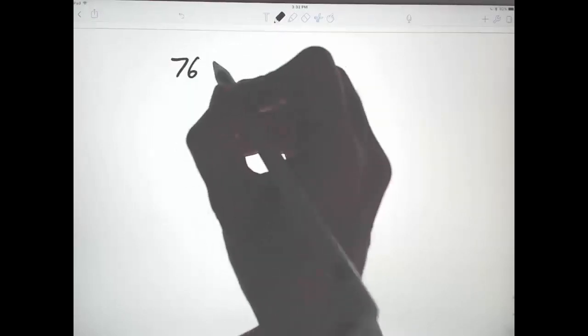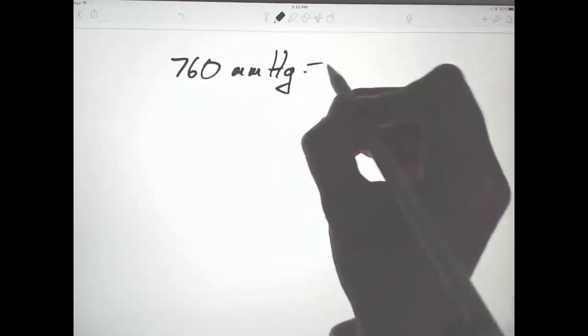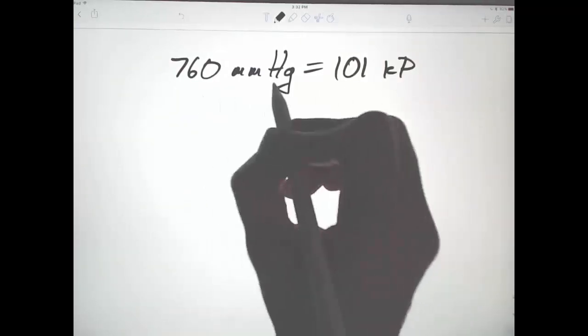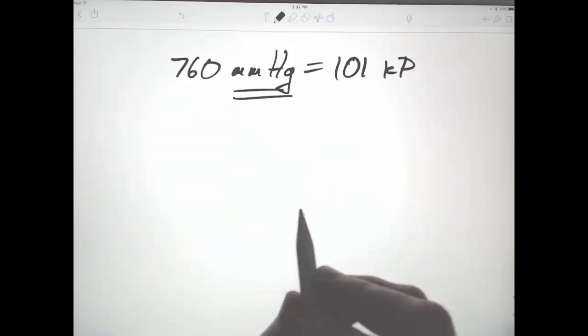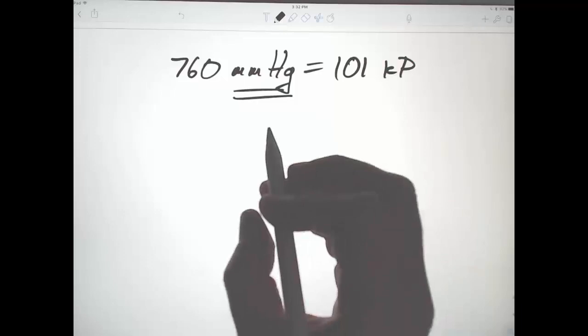The total pressure at sea level is 760 mmHg, which is equal to the SI unit, 101 kPa. Unfortunately, this is the one that's used all the time, mmHg, in the United States instead of the SI unit. So that's what we're stuck with.